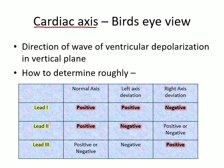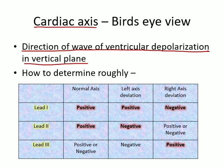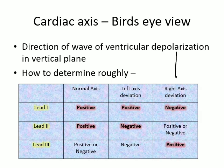Cardiac axis is defined as the direction of the wave of ventricular depolarization in a vertical plane. I like to divide the dimensions into two: vertical, the y-axis, and horizontal, the x-axis. If you imagine the heart sitting at the origin, the normal axis lies somewhere directed towards the apex.